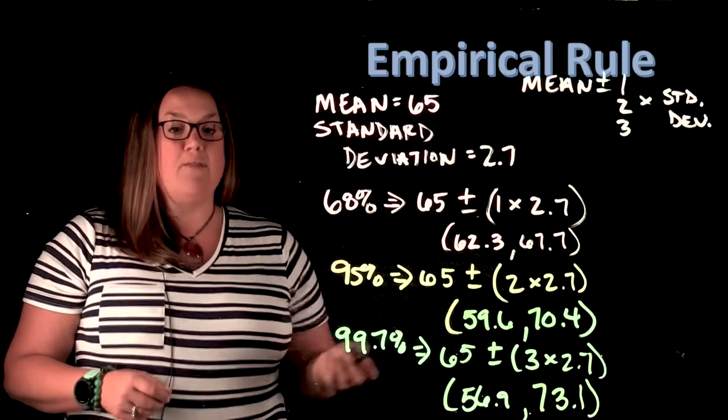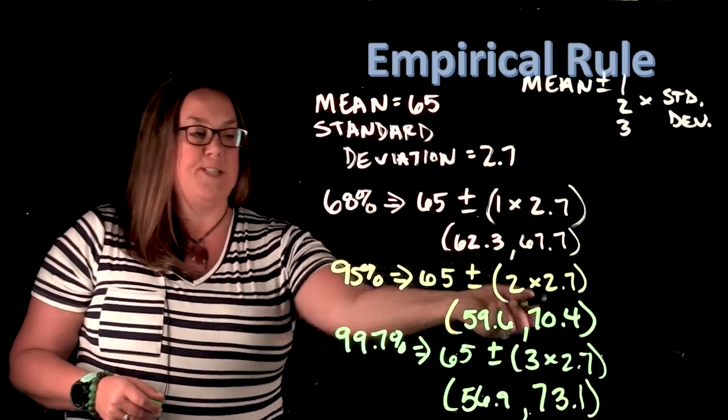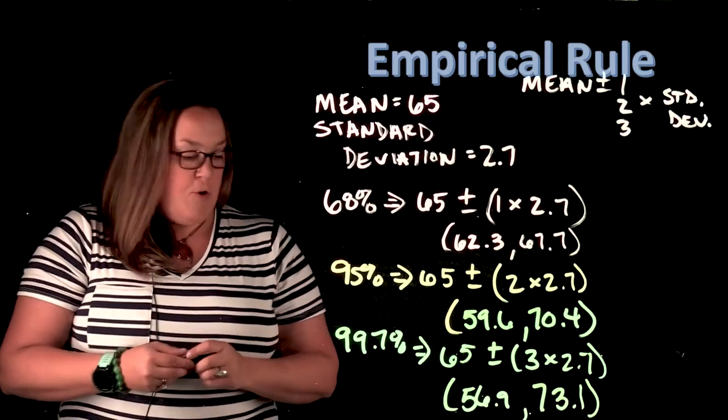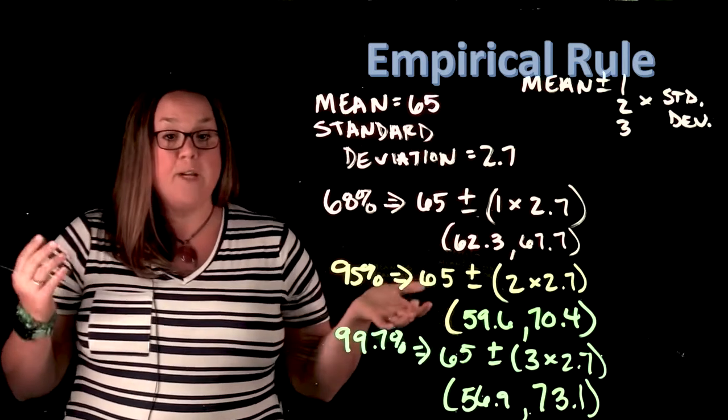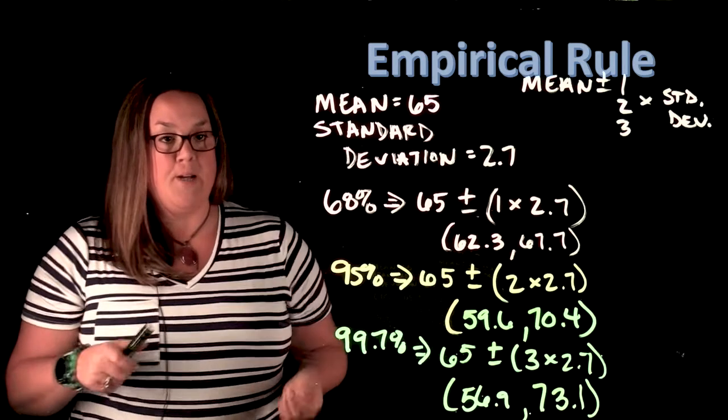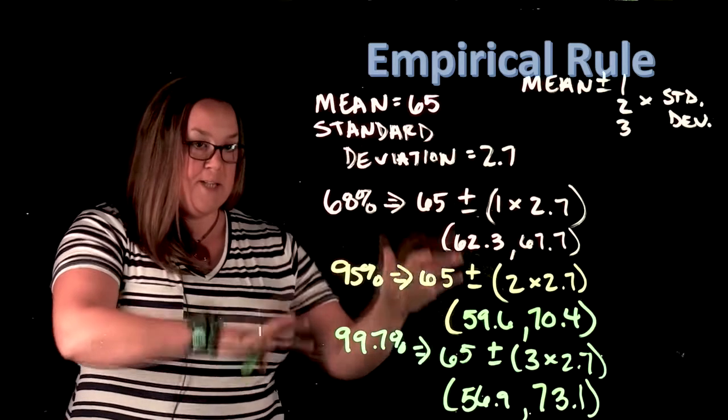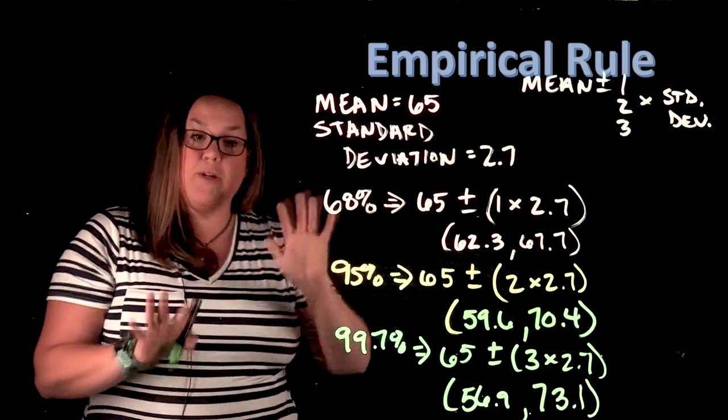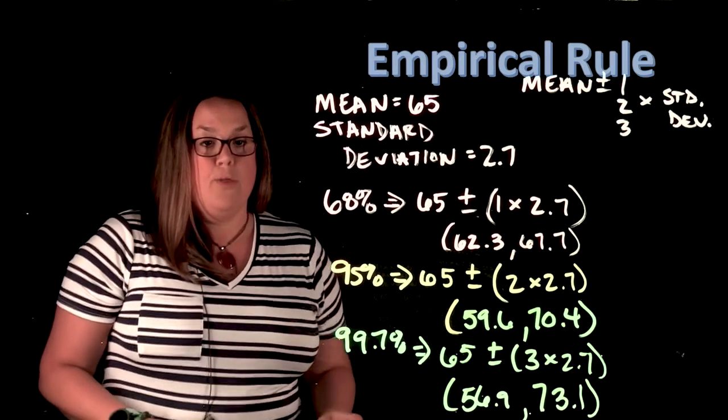We could say 95% are between 59.6 and 70.4, or you could say the probability of finding a female between those heights would be 95%. So on the next illustration, we're going to put this onto the curve.